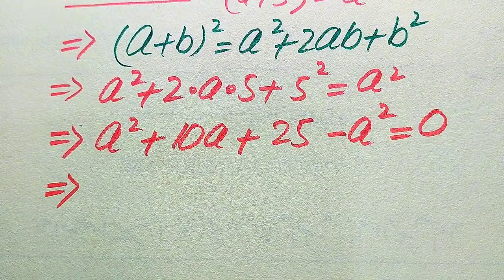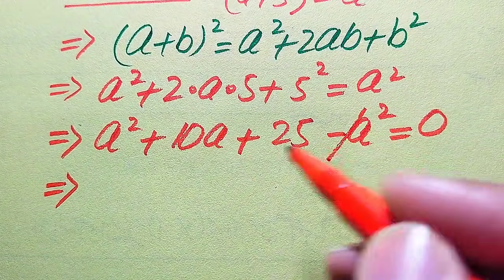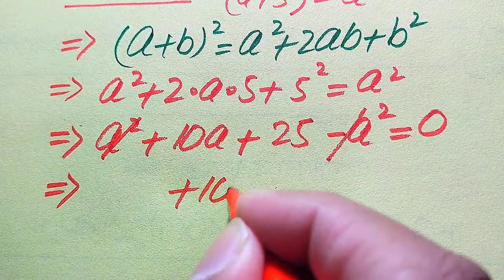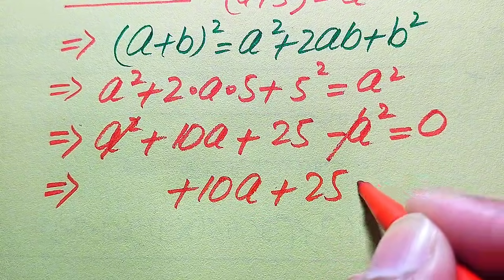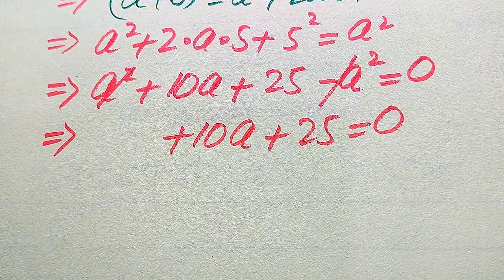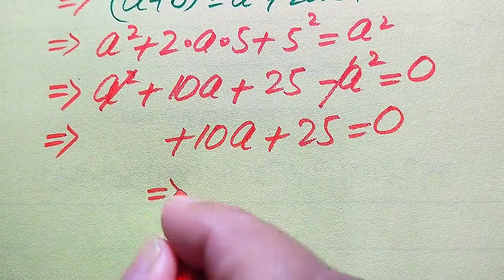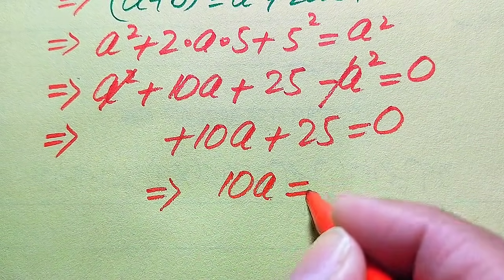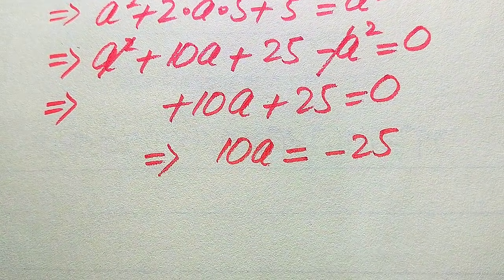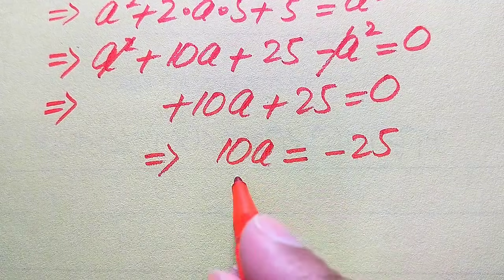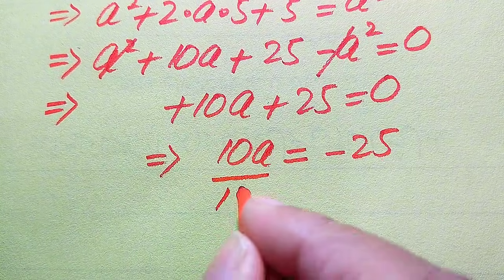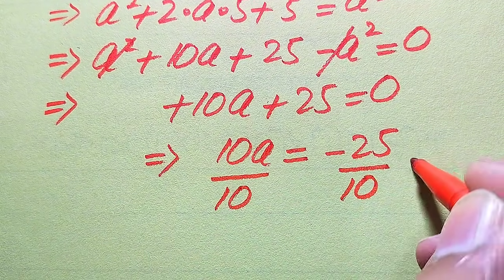In the next step, the a² and −a² cancel out, and we get 10a + 25 = 0. To find the value of a, we move 25 to the right-hand side, giving us 10a = −25.